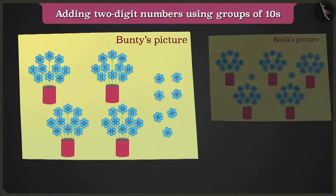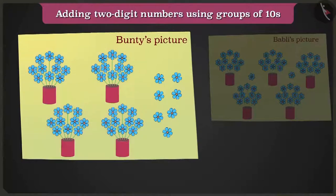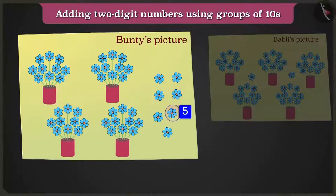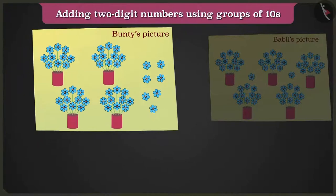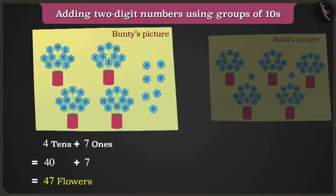Bunty's drawing paper has one, two, three and four flowerpots of ten flowers each, and one, two, three, four, five, six, seven loose flowers. There are four tens that are forty and seven ones that are seven. Forty and seven — in total, there are forty-seven flowers.